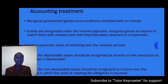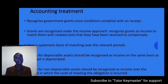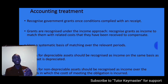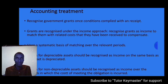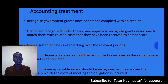Under IAS 20 we have two approaches: the income approach and the capital approach. Once the recognition conditions have been met, IAS 20 requires the use of the income approach — meaning we should recognize government grants as income in the statement of profit or loss, to match them with the related costs they have been received to compensate. Do not recognize government grants under equity. Use a systematic basis of matching over the relevant periods.